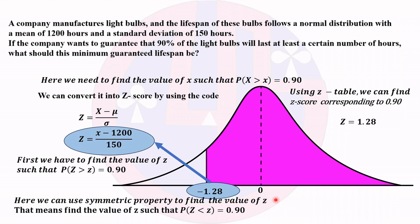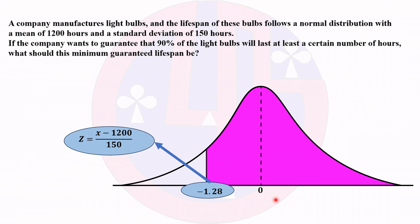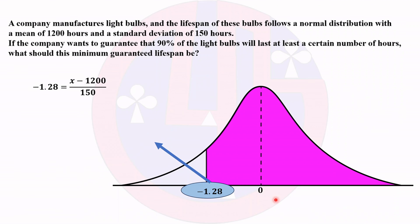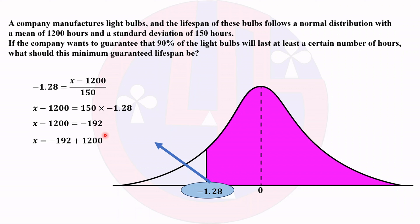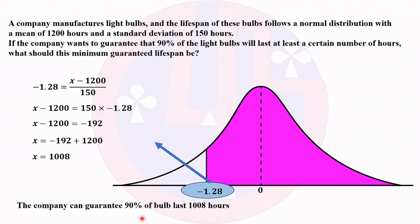Substituting Z = −1.28 into the equation: −1.28 = (X − 1200) / 150. Using cross multiplication: X − 1200 = 150 × (−1.28) = −192. Therefore X = −192 + 1200 = 1008 hours. The company should guarantee that 90% of bulbs last at least 1008 hours.